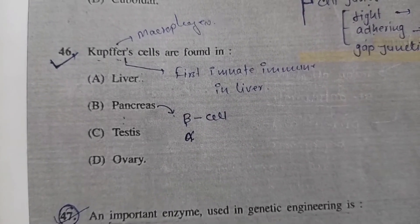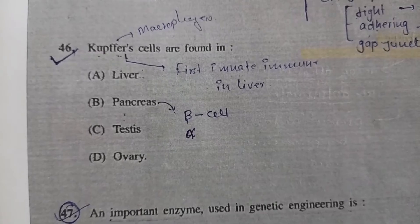Question 45: The epithelium present on the inner surface of fallopian tube is - Answer is option A, ciliated. Question 46: Kupffer cells are found in - Option A, liver.